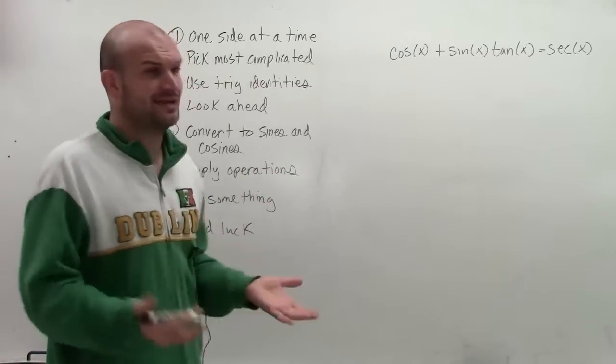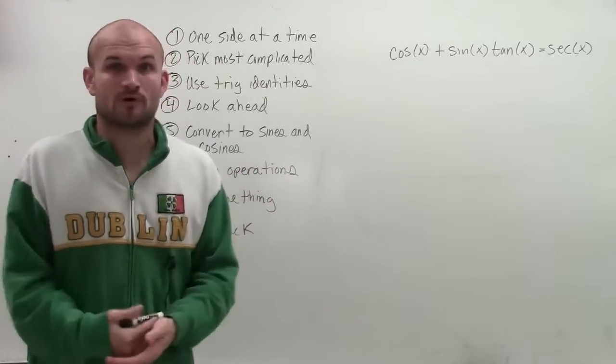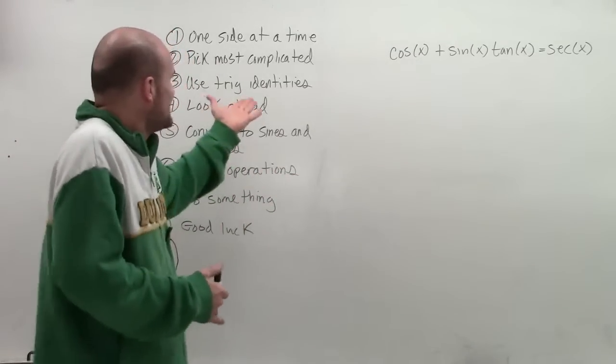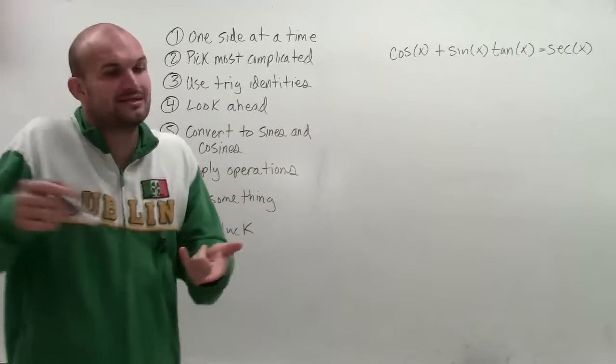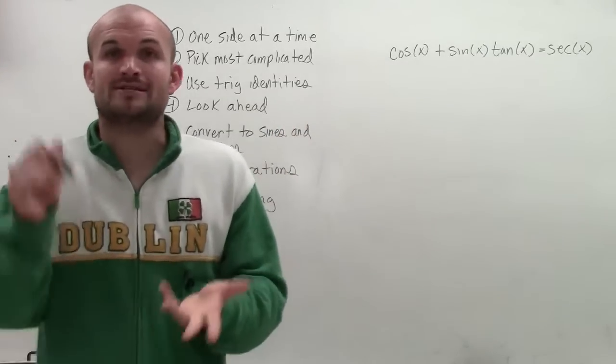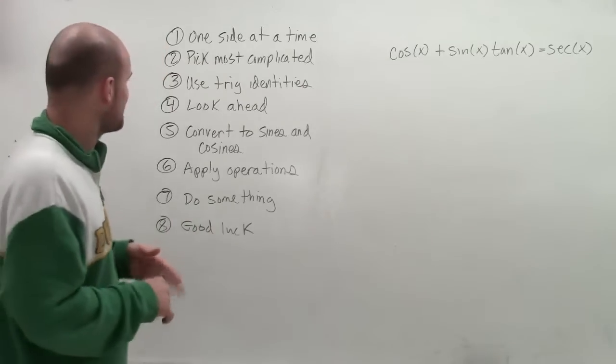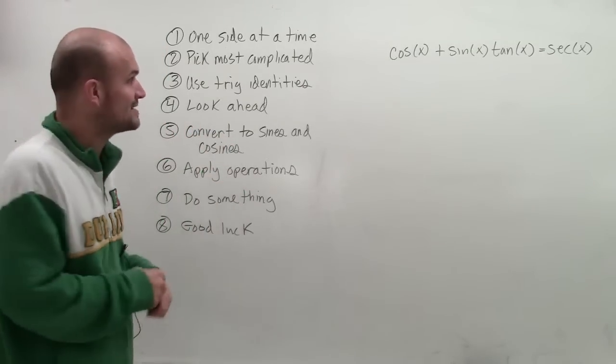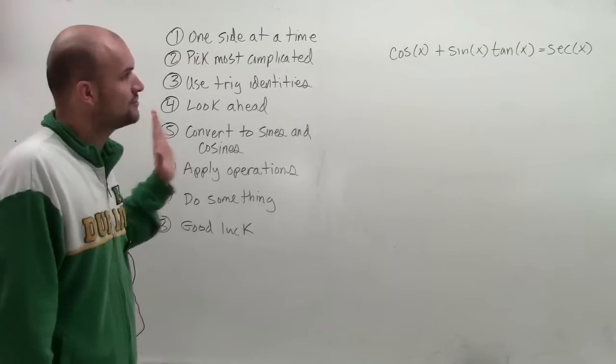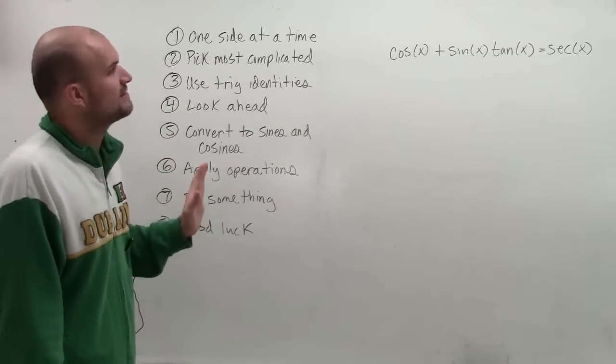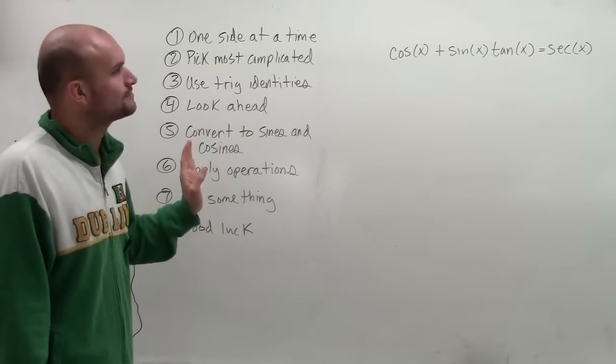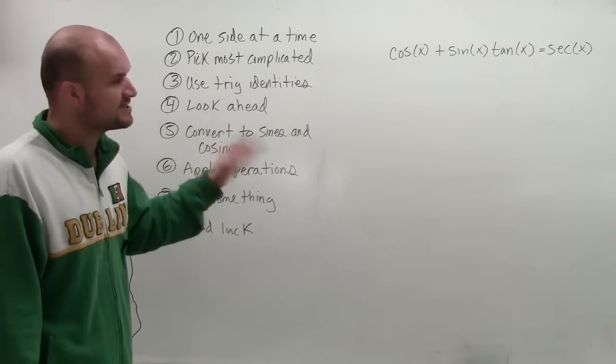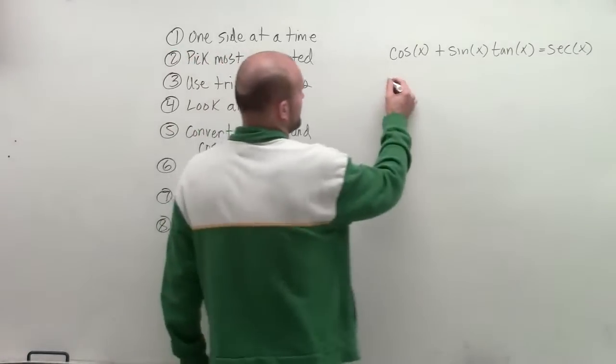Well, by looking at this, I can't use my Pythagorean identities, which are very important, which we use a lot. But the next identity I could use is, the only other identities I could use would be my quotient and my reciprocal identities. And a lot of those come into converting everything to kind of sines and cosines. So what I'm going to do is I'm going to rewrite this by using everything as far as my reciprocal and quotient identities.